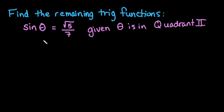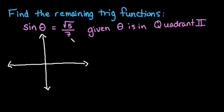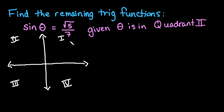Anytime you are working with these kinds of problems, the first thing I advise doing is just draw a rough sketch. We order quadrants counterclockwise: quadrant 1, 2, 3, and 4. In quadrant 1, cosine and sine are both positive. In quadrant 2, cosine is negative and sine is positive. In quadrant 3, both are negative. In quadrant 4, cosine is positive and sine is negative. Knowing the signs is helpful when solving these types of problems.